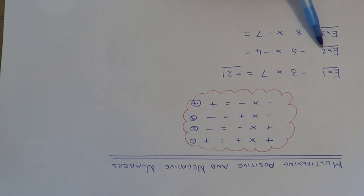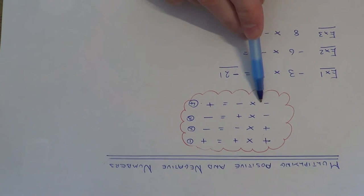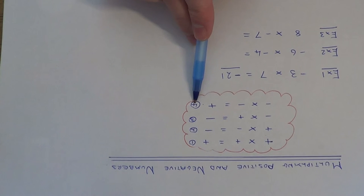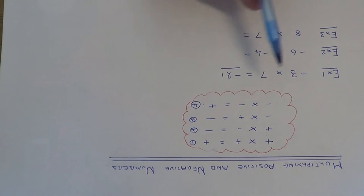Let's look at example two. This time we have minus six times minus four, so we have a negative number times another negative number. We know that our answer is going to be positive. This is rule four, because two negatives make a positive.